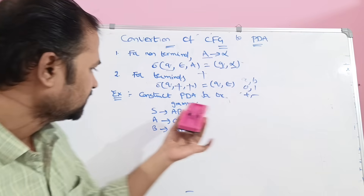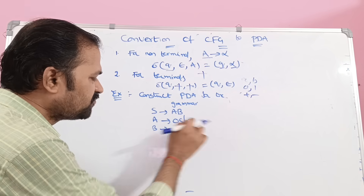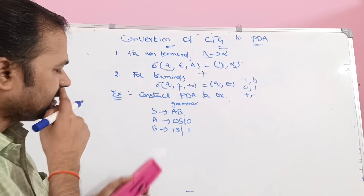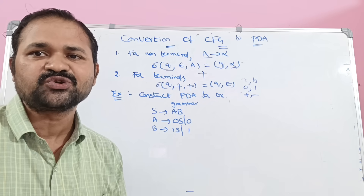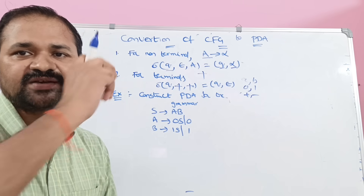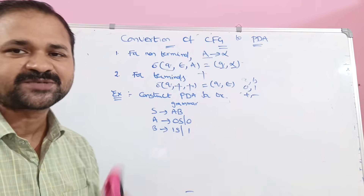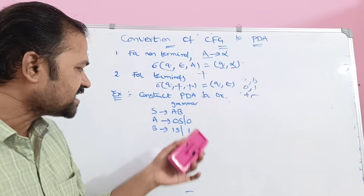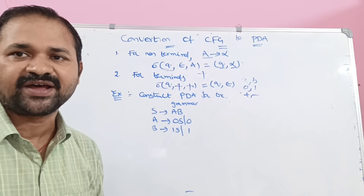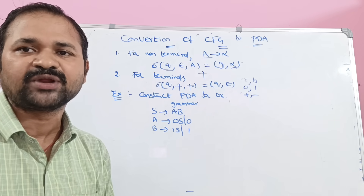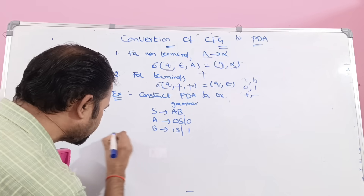So here we have 5 productions total: 1 for S, 2 for A, and 2 for B. For all 5 productions, we have to write the corresponding transition functions. As well as we have 2 terminal symbols — 0 and 1 — so for those 2 also, we have to write the transition functions. First, let us consider the first production.